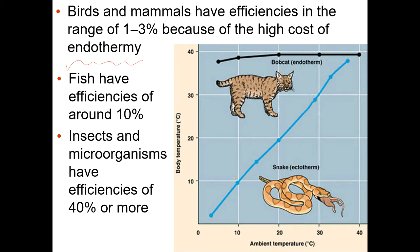So if it's 10 degrees out, it's going to have a body temperature of about 10 degrees. If it's 20 degrees outside, it's going to have a body temperature of about 20, whereas an endotherm is going to keep its body temperature stable. It takes more energy, especially at colder temperatures, to stay warm. Insects and other microorganisms have about 40% efficiency, and fish about 10% efficiency. Just know that it takes more energy for an endotherm to stay stable.